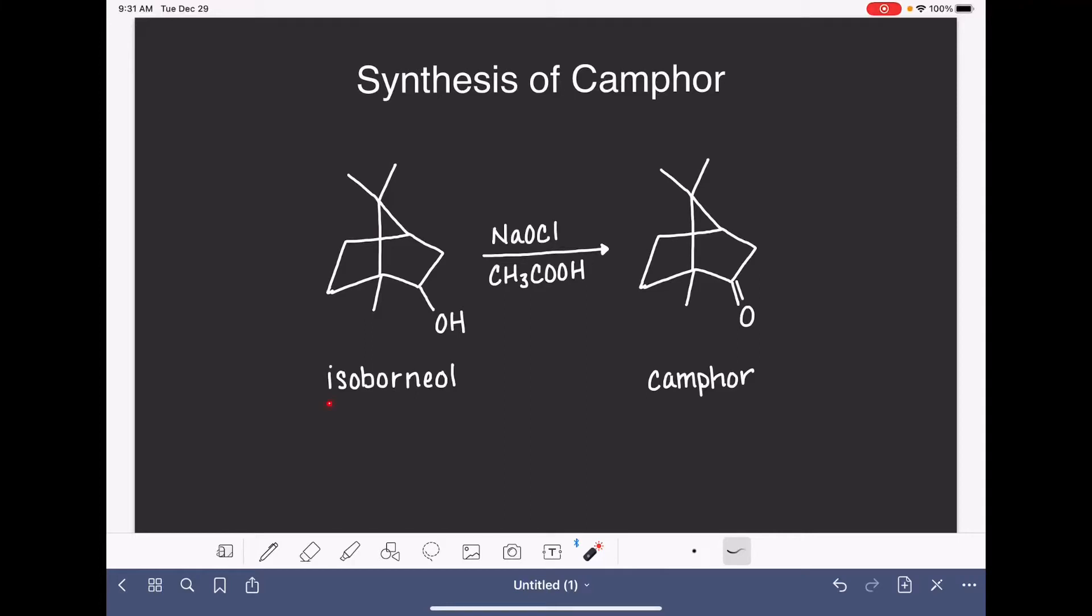In this experiment we're going to be converting isoborneol to camphor. Isoborneol is a secondary alcohol, camphor is a ketone, which means that this process is an oxidation reaction.